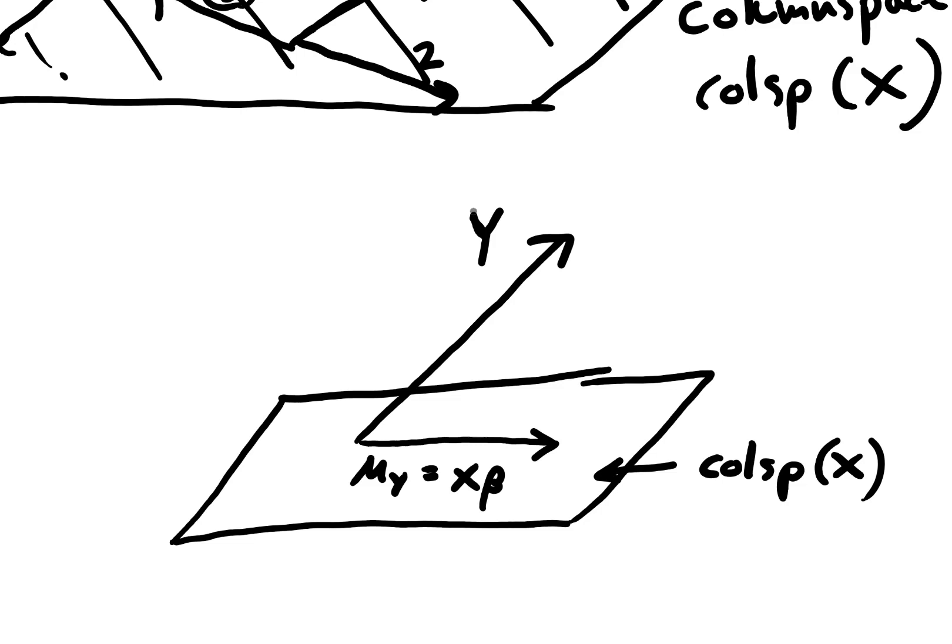So what we're going to do is search for a vector in the column space that's closest to the vector y. It turns out that the optimal solution, so the error is minimized, when the error vector is perpendicular to the column space. So if we have a vector that's perpendicular to the column space, that's going to look like this. And this is our error vector. So this is y minus new y, and so then this is equal to y minus x beta.